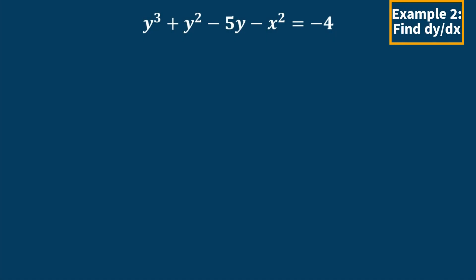Example number two, we want to find dy dx of this equation here. So let's start from left to right. I'm going to look at this term here, and we see that the variables disagree. So if I were to take the derivative of that, we're going to have 3y squared, and then we have to include dy dx at the end.